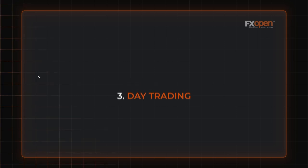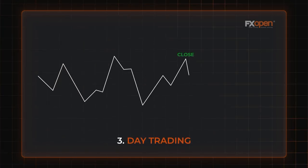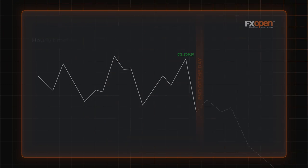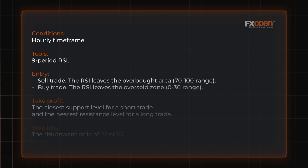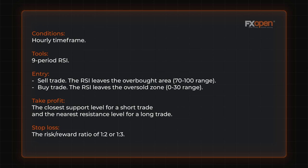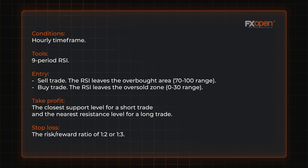Day, or so-called intraday trading, is one of the best Forex trading systems. It's used when a trader closes a position before the day ends to limit risks of unexpected events that can cause enormous volatility on the next day and avoid rollover fees. One of the best trading strategies on the hourly chart is day trading with RSI. A sell position can be opened when the RSI leaves the overbought area — the 70 to 100 range — and a buy position when the RSI leaves the oversold zone — the 0 to 30 range. Traders usually choose the closest support level for a short trade and the nearest resistance level for a long trade as potential profit targets. The risk-reward ratio of 1 to 2 or 1 to 3 would help determine the stop loss level.